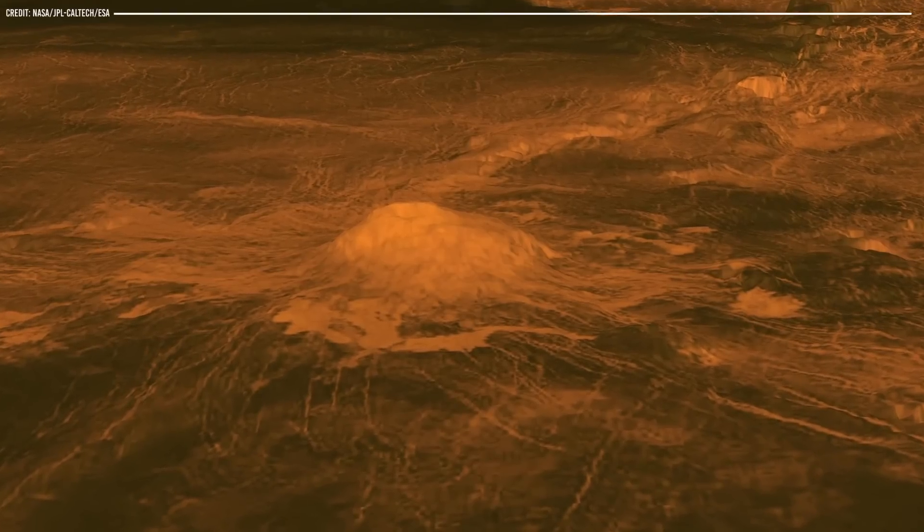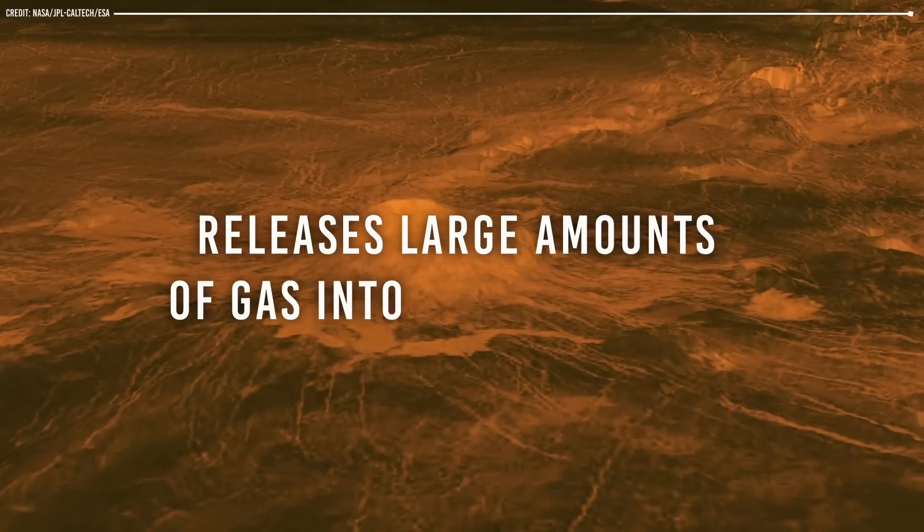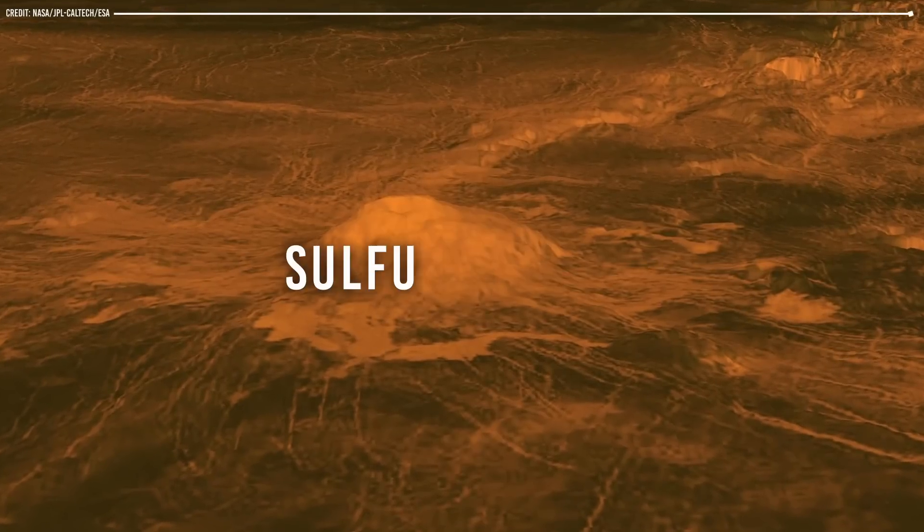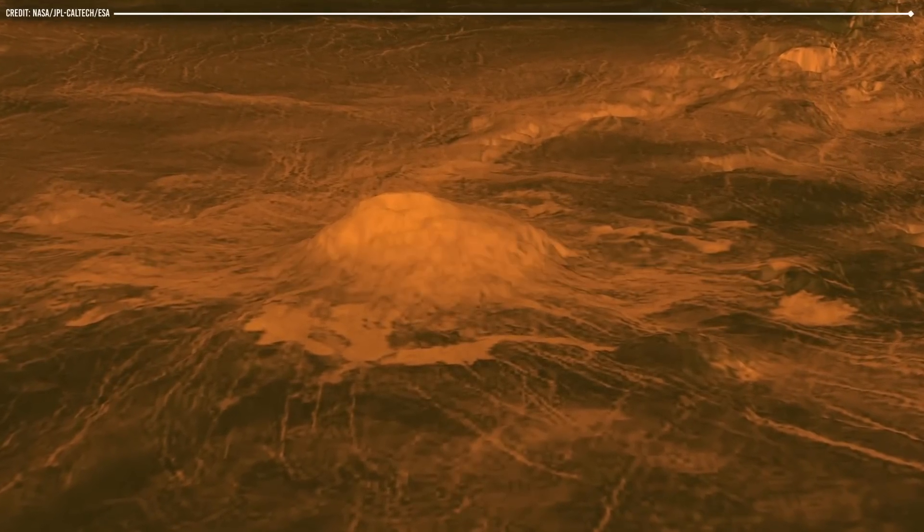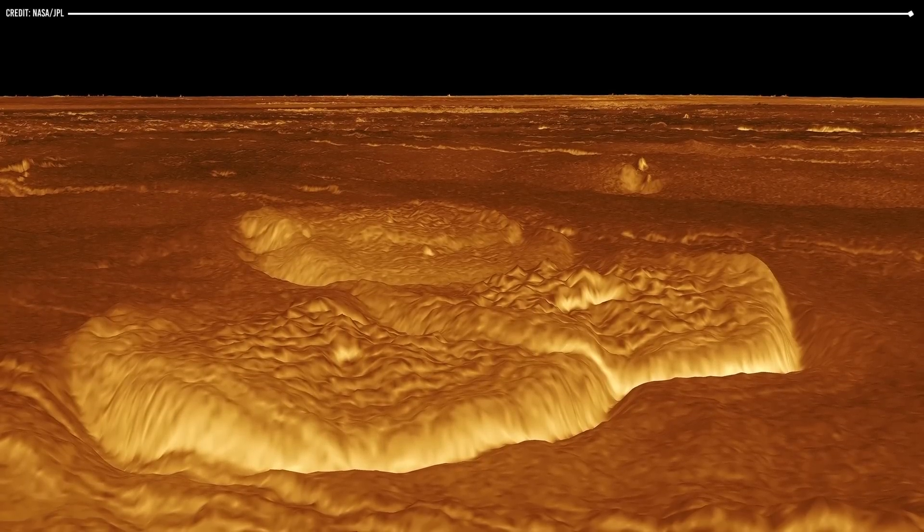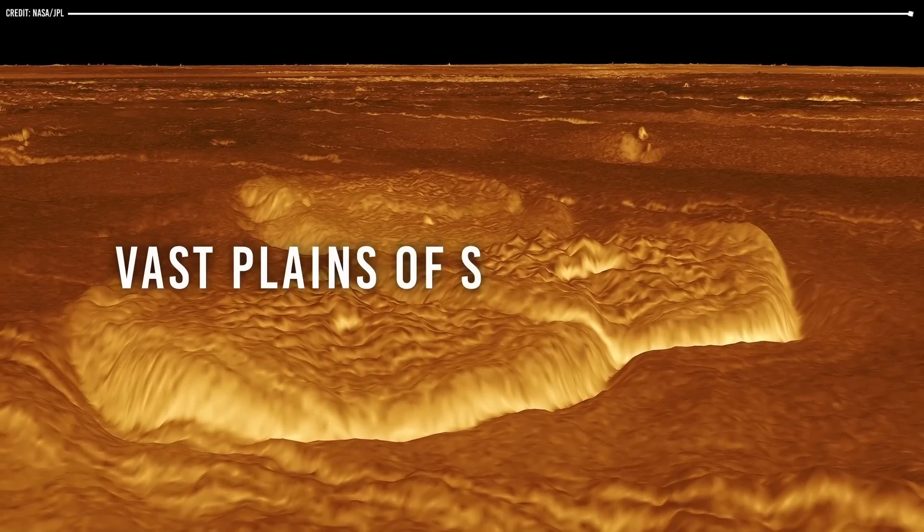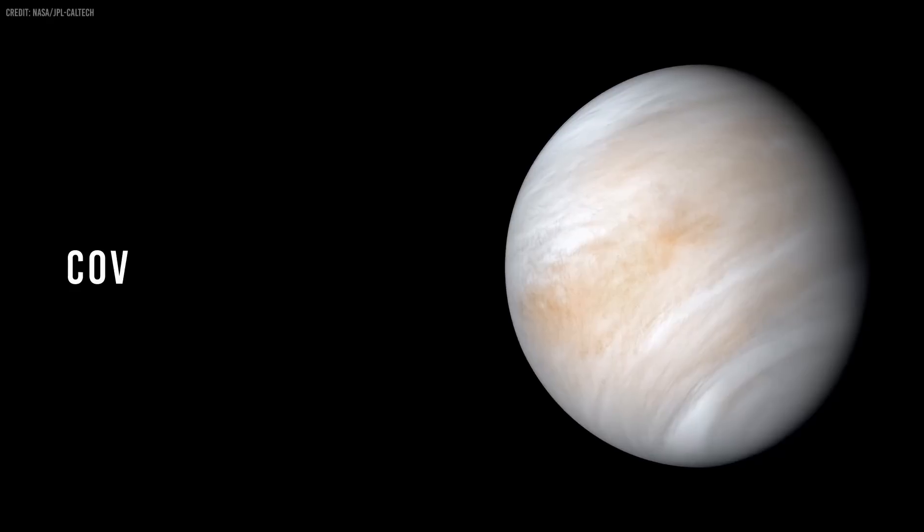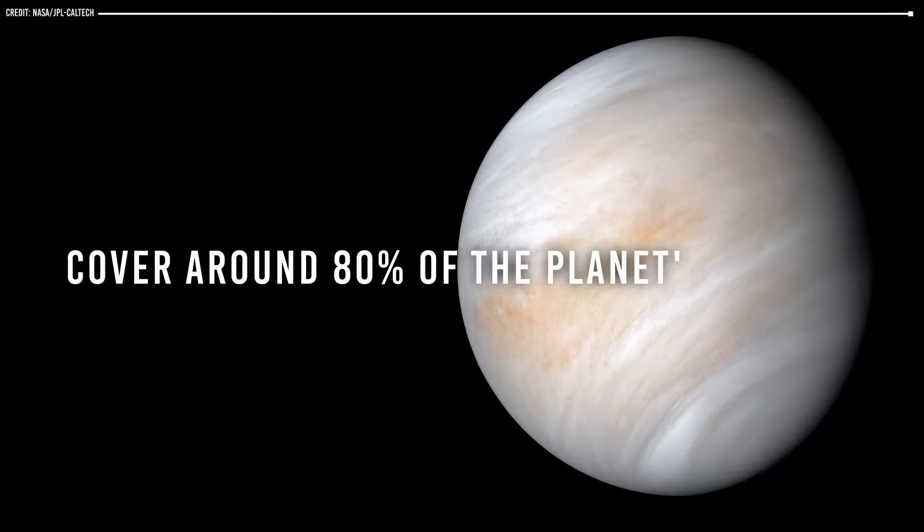Volcanic activity on Venus releases large amounts of gas into the atmosphere, including sulfur dioxide, which contributes to the greenhouse effect. The planet's volcanic activity also has led to the formation of vast plains of solidified lava, which cover around 80% of the planet's surface.